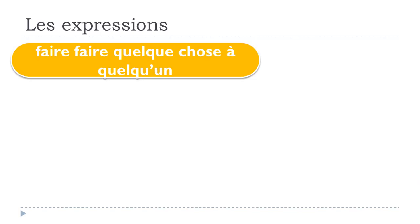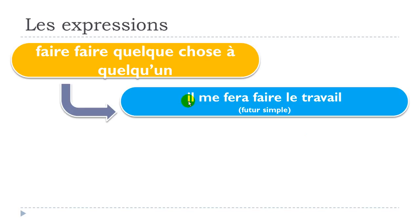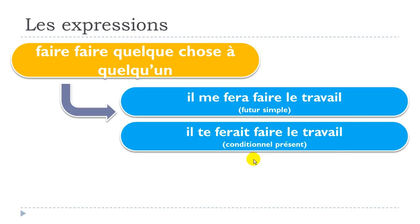Let's now look at this expression at different tenses with pronouns. For the future simple with the first person singular, we get: 'il me fera faire le travail.' As usual, only the first 'faire' is conjugated; the second stays at the infinitive. For the conditionnel présent with the second person 'tu': 'il te ferait faire le travail.'